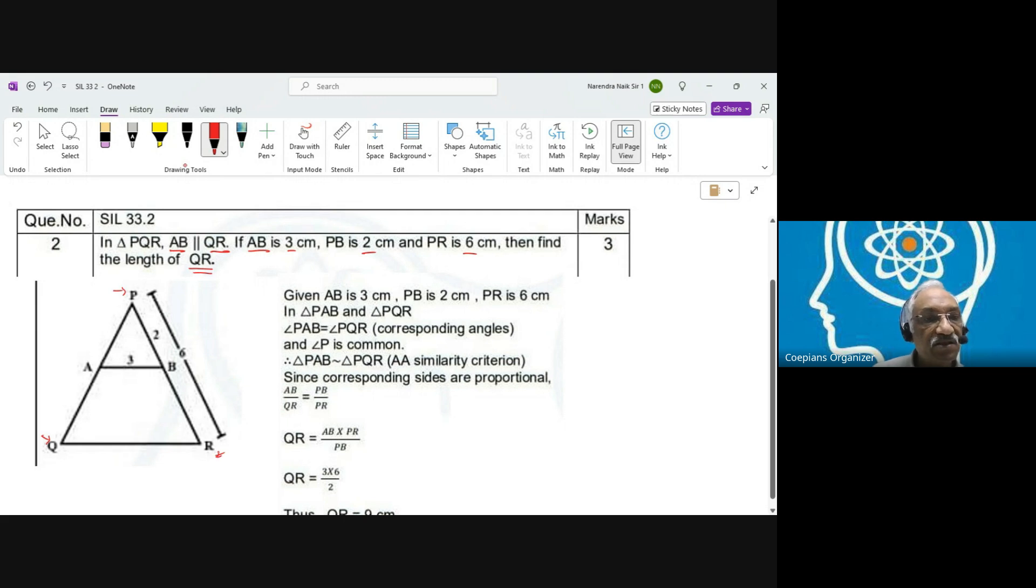So this is P, this is Q, this is R. We've drawn the diagram. This particular length AB is 3, and AB is parallel to QR. That is what is given. AB is parallel to QR. So what we have to do is find the length QR.